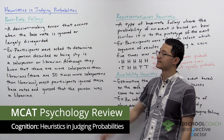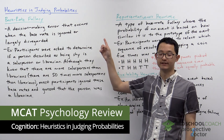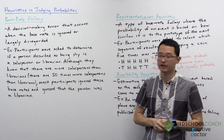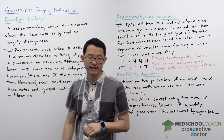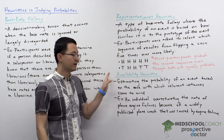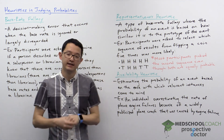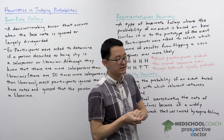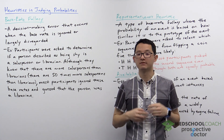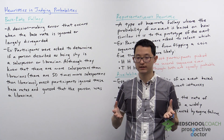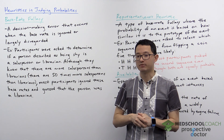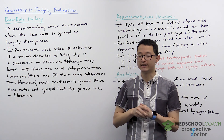In this video we're going to discuss heuristics and judging probabilities, and in particular we're going to go over the base rate fallacy, the representativeness heuristic, and the availability heuristic. As a reminder, heuristics are practical methods for solving problems, and sometimes they work and sometimes they don't work. In this video we're going to look at several examples where they can fail.